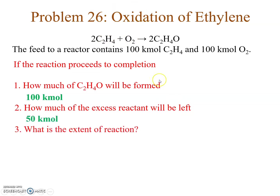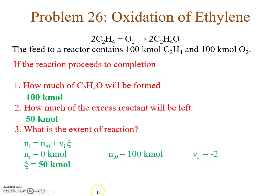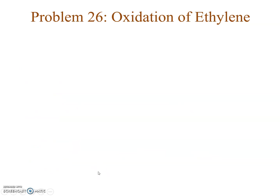What is the extent of reaction when the reaction goes to completion? Using Ni = Ni₀ + νi × ζ for ethylene: final moles = 0, initial = 100, stoichiometric coefficient = −2. Solving: 0 = 100 + (−2)ζ, giving ζ = 50 kilo moles. So the extent of reaction is 50 kilo moles.